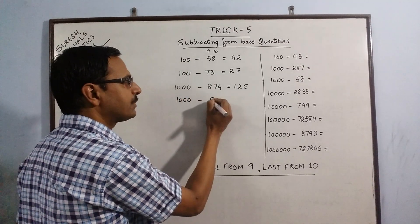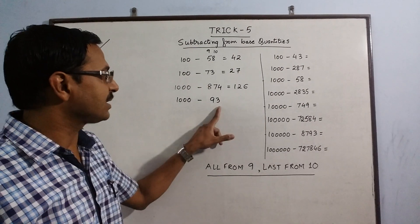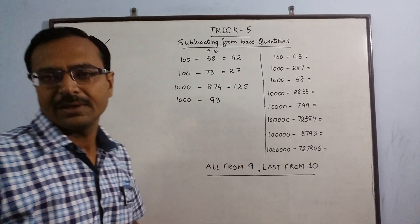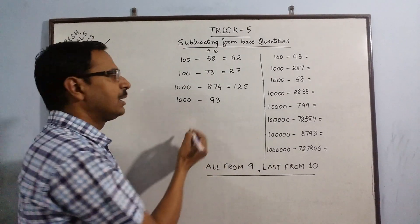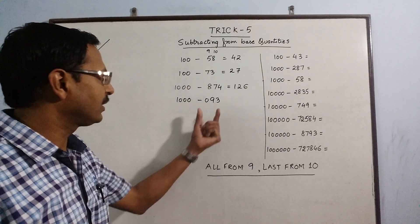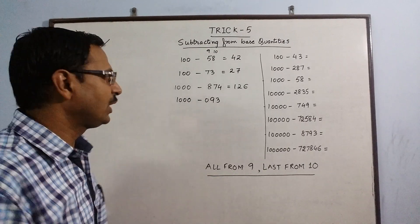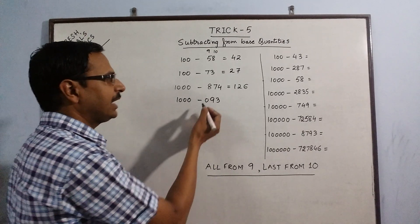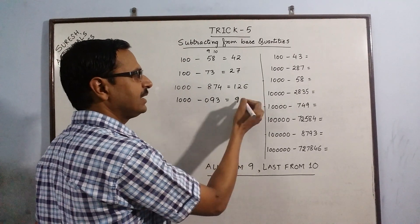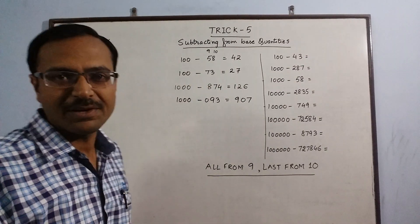Supposing the number to be subtracted contains fewer digits than the number of zeros, we simply equalize the number of digits with the number of zeros by putting a zero before the number. So here there are 3 digits now and 3 zeros in the base quantity. Now we apply the rule: 9 minus 0 gives us 9, 9 minus 9 is 0, and 10 minus 3 is 7. So 907 is the difference.